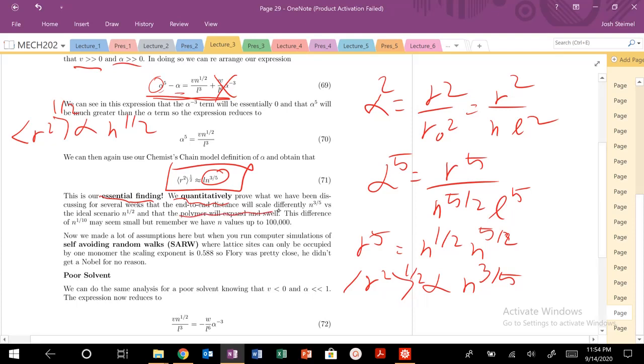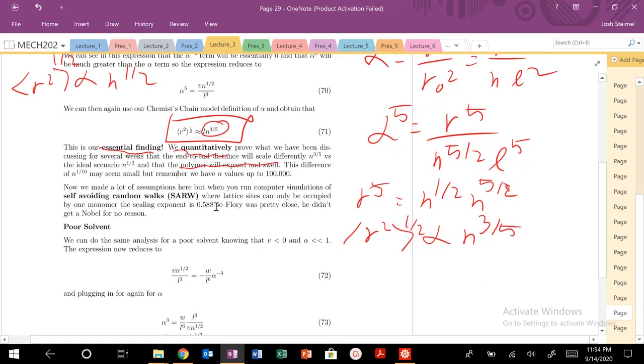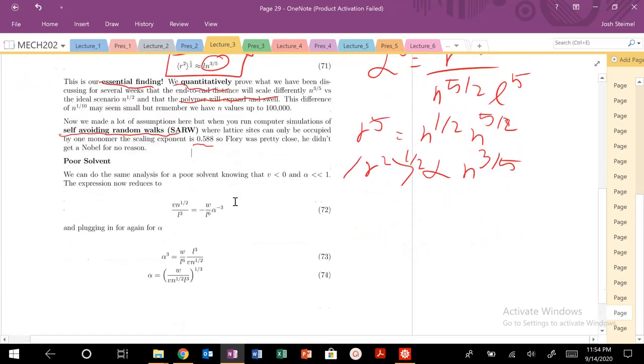So, it will swell. That polymer will expand. And we've kind of now proven that exhaustively and quantitatively as well. Also, it's pretty cool that even if you run computer simulations that basically do self-avoiding random walks, you can basically almost obtain this scaling exactly. So, the real scaling exponent for self-avoiding random walks is 0.588. So, Flory was very, very, very close. Just from a pure, again, first principles, nice kind of theoretical derivation on how this polymer should behave in a good solvent.